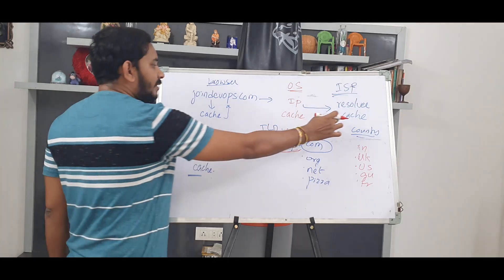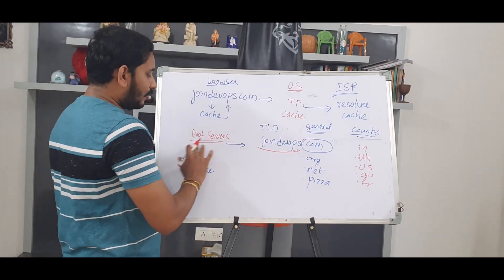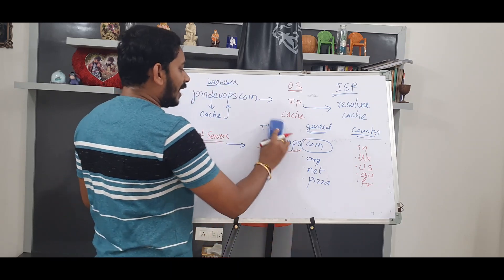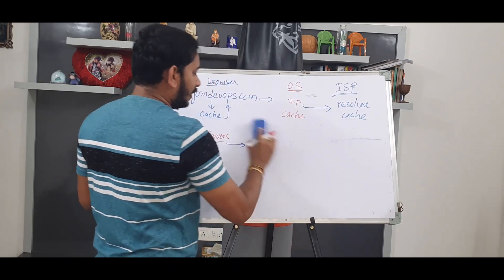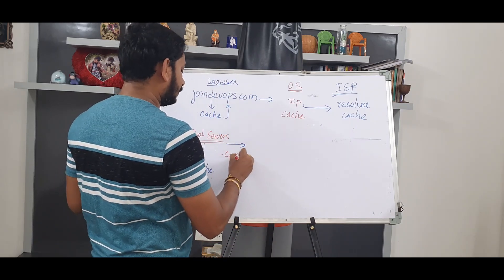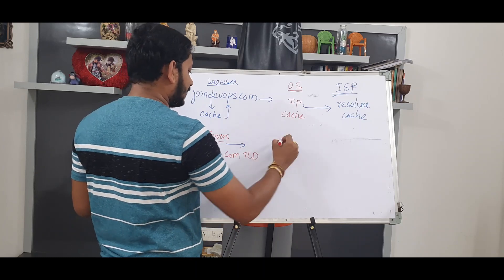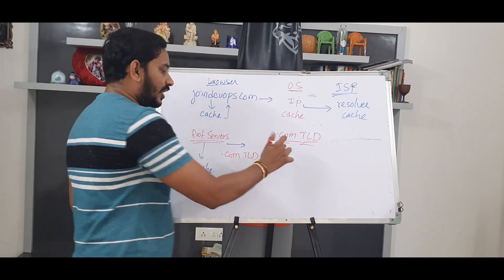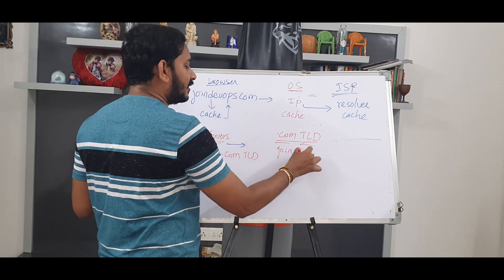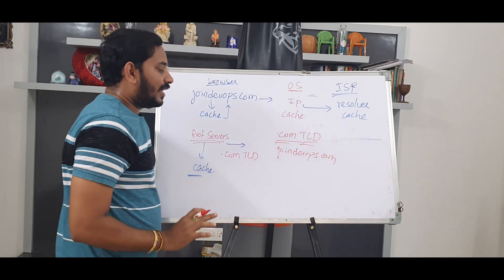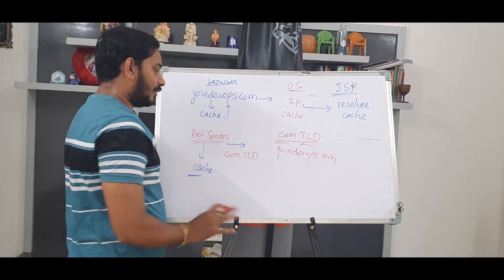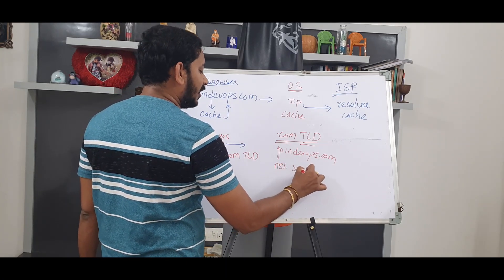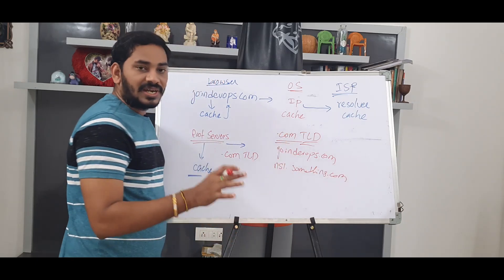The root server's job is, when the ISP asks for joinDevOps.com, the root server scans this domain. It identifies this is .com TLD and returns the .com TLD information. There are nameservers — for example, ns1.something.com. These are nameservers, and we will discuss them further.